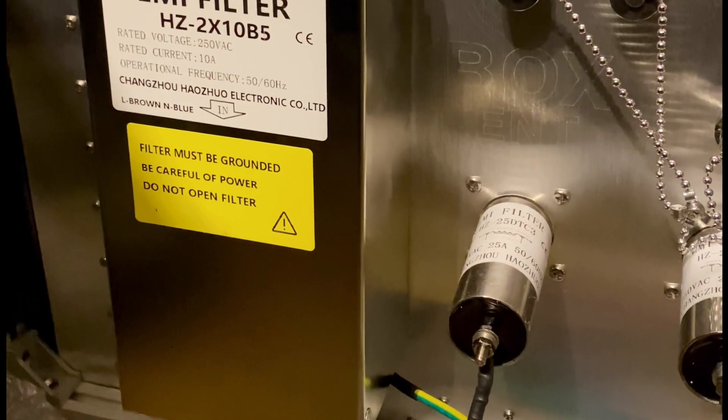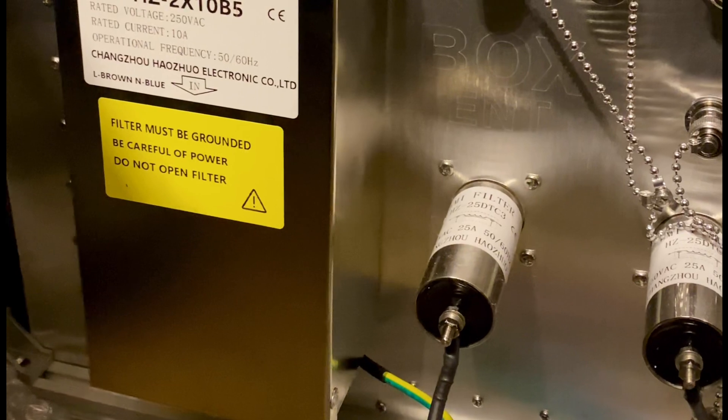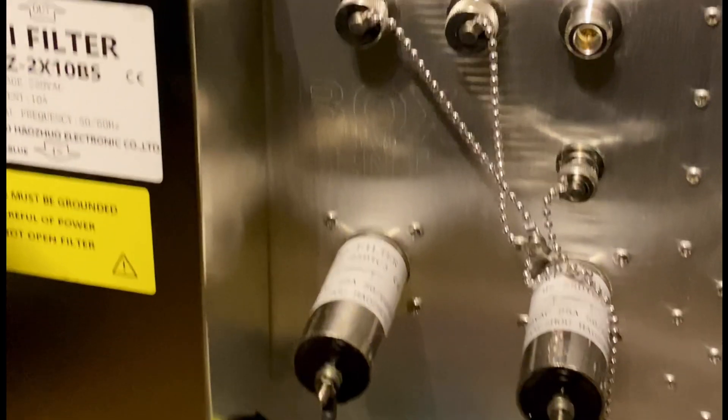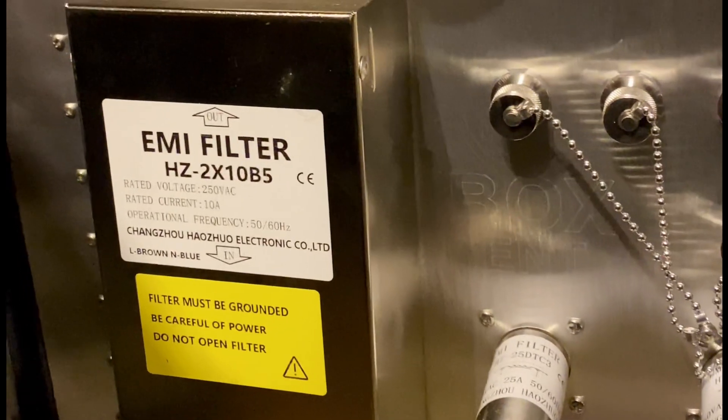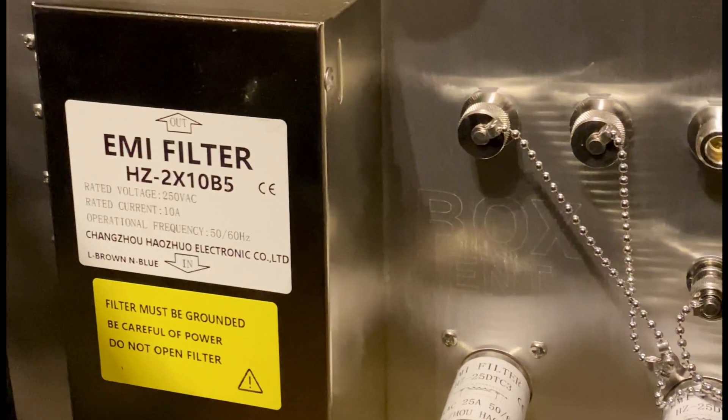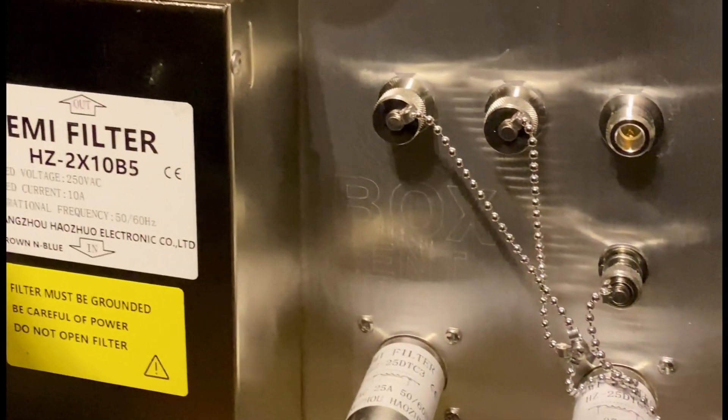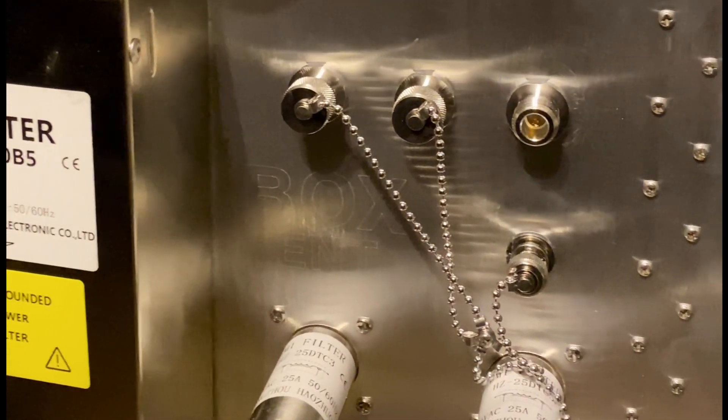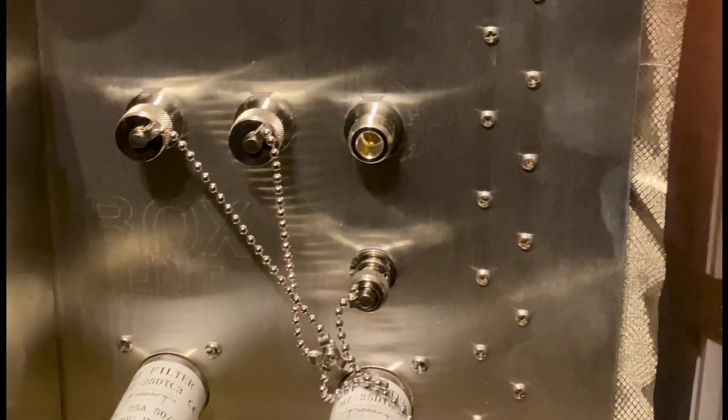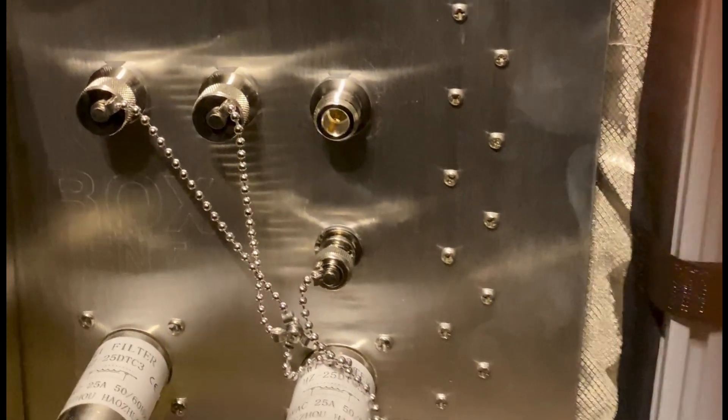The EMC shielding tent we're using is from TechBox. Here shows the sidewall of the tent. As you can see, on the left, there is a big EMI filter designed for mains input. And on the right-hand side, you have two feed-through filters, so that they are PI filters for your DC power supply. And of course, there are some measurement connectors here as well.